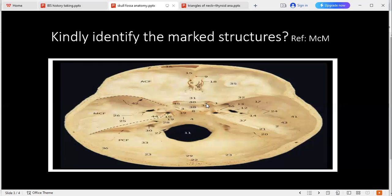Can you please identify foramen rotundum for me? Foramen rotundum is number 13. What passes through it? It passes the maxillary division of the trigeminal nerve.